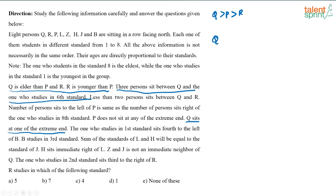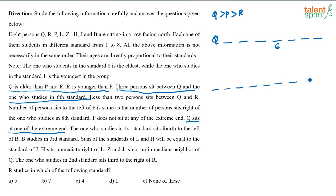One possibility is Q is at this end. Remaining 7 people will be there. If Q is here, three persons sit between Q and the one in 6th standard — so position 1, 2, 3 from Q gives us the 6th standard person. That is one possibility. The other possibility is Q is at the other extreme end, and counting 1, 2, 3 from there gives the 6th standard position — that is the second possibility.